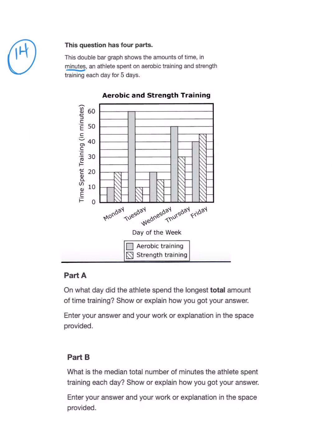Part A asks, on what day did the athlete spend the longest total amount of time training? Total is a keyword in bold. When you see total, it wants both the aerobic and the strength training.